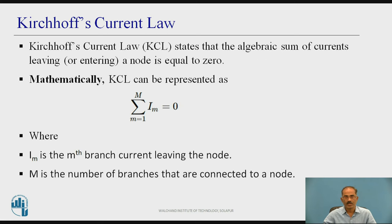Kirchhoff's current law or KCL. Kirchhoff's current law states that the algebraic sum of currents leaving or entering a node is equal to 0. Mathematically, it can be expressed as summation small m equal to 1 to capital M, I suffix small m which is equal to 0. Where I suffix small m is the mth branch current leaving the node. Where capital M is the number of branches that are connected to a node.